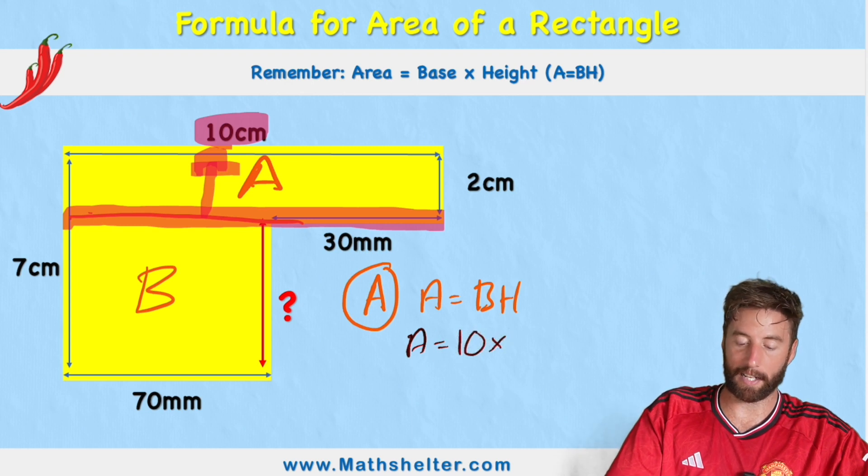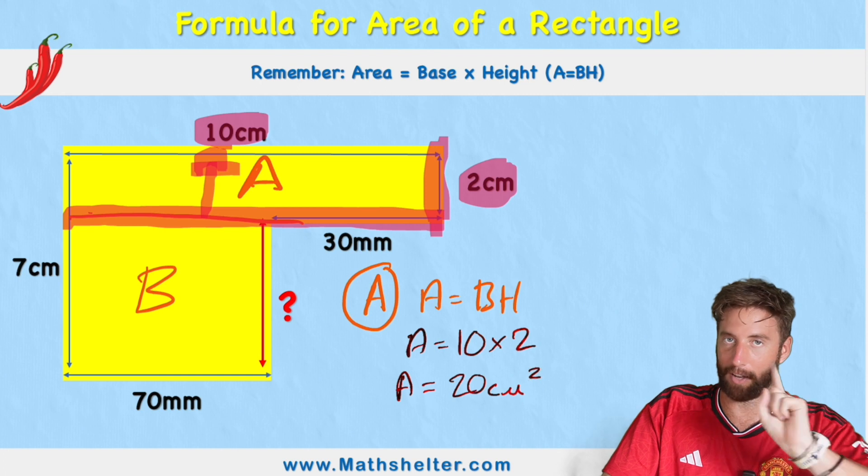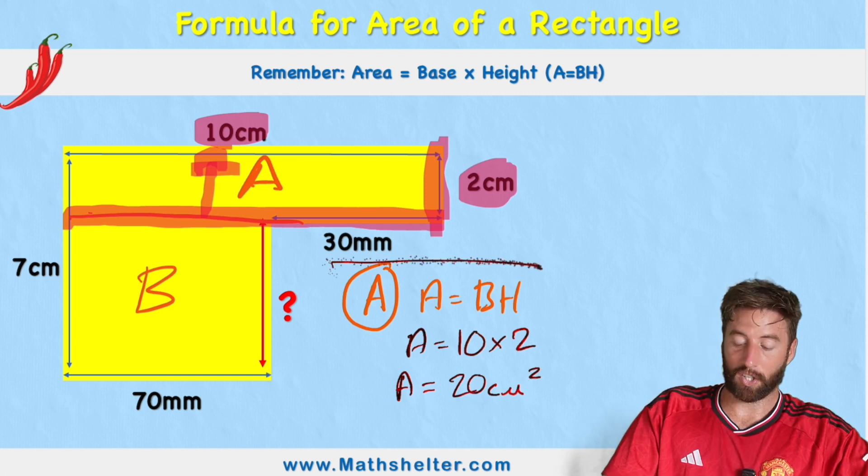So we're going to have area equals 10 times, well, what's our height? We can see our height will be over here of 2 centimeters. So 10 times 2. So therefore, area equals 20 centimeters squared. Don't forget that part. So that's shape A.